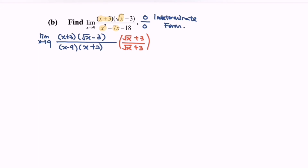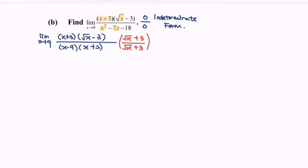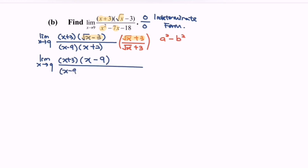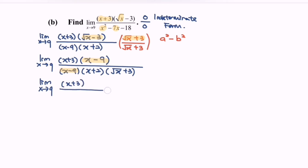So next, what we have to do is to expand the situation. Do remember, only expand for one part. For this question, my focus would be on the numerator. Limits when x approaching 9. For the numerator, (x plus 3) multiplied with (x minus 9) — because when we multiply by the conjugate, the formula we apply is a squared minus b squared. Over (x minus 9) multiplied with (x plus 2) multiplied with (square root of x plus 3). Notice that we have common terms, so we can simplify the situation.